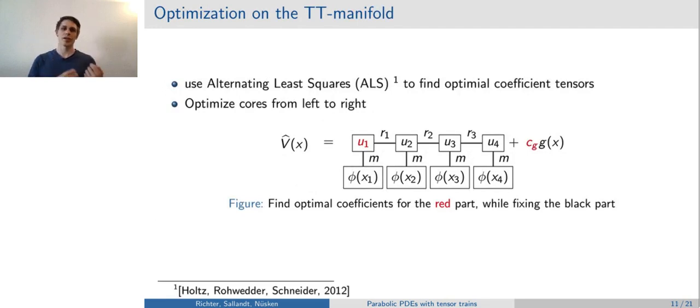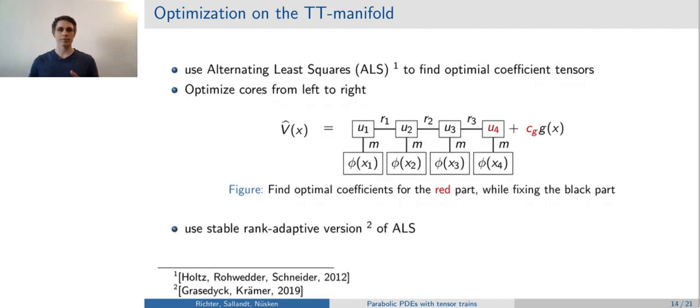There is an efficient algorithm, the alternating least squares algorithm, which reduces the high-dimensional problem to a sequence of low-dimensional subproblems. The important observation is that by fixing every core except for one, a low-dimensional linear parameterization is remaining. The ALS algorithm first optimizes u1, then goes from left to right and repeats this procedure until the last one is optimized. We use a rank-adaptive extension of such an algorithm.